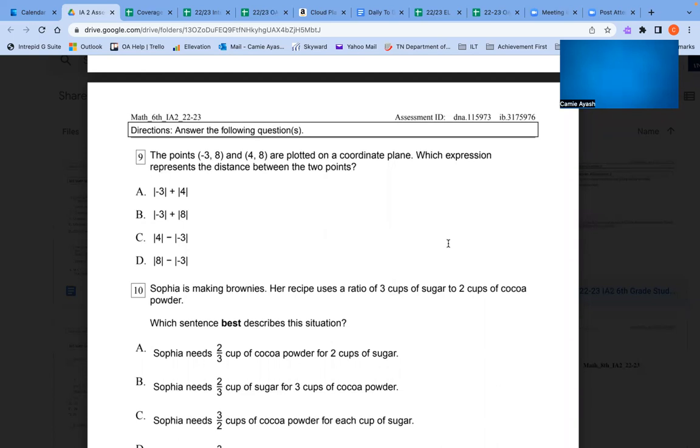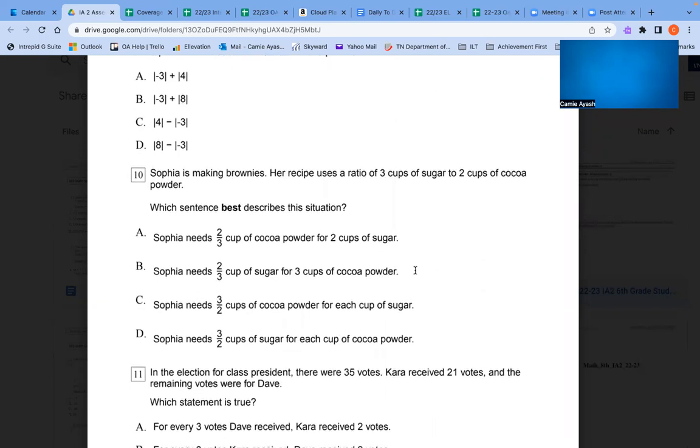Number 10: Sophia is making brownies. Her recipe uses a ratio of 3 cups of sugar to 2 cups of cocoa powder. Which sentence best describes this situation? A. Sophia needs 2/3 cup of cocoa powder for 2 cups of sugar. B. Sophia needs 2/3 cup of sugar for 3 cups of cocoa powder. C. Sophia needs 3/2 cups of cocoa powder for each cup of sugar. D. Sophia needs 3/2 cups of sugar for each cup of cocoa powder.